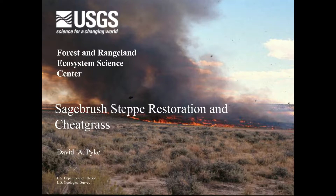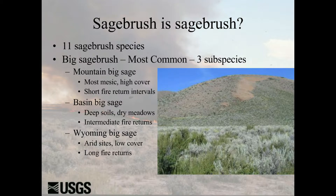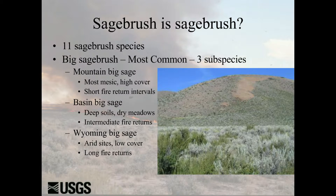Bear with me as we go through this, because we're not going to start talking about native plant restoration. We're actually going to start talking about soil microbes below the soil surface. But before we do that, I want to point out that there are probably more than 11 sagebrush species in the Great Basin now. A common issue I run into with wildlife biologists is this whole idea of sagebrush being sagebrush everywhere. We really need to make sure we're looking at the right species, and within some groups, the right subspecies as well.